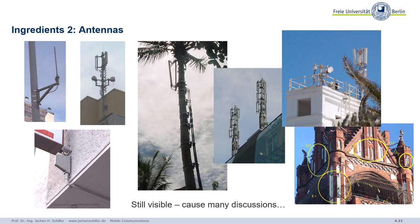Quite famous for mobile phone systems are these antenna poles with several antennas, typically responsible for different mobile phone systems — second generation, third generation, fourth generation — sometimes built tilted downwards towards the street. Sometimes antennas are integrated in buildings so not simply visible, or sometimes attached to a tree. Different types of antennas, still visible, cause many discussions. People do not like antennas, but we actually need them — without antennas, no mobile phone systems.